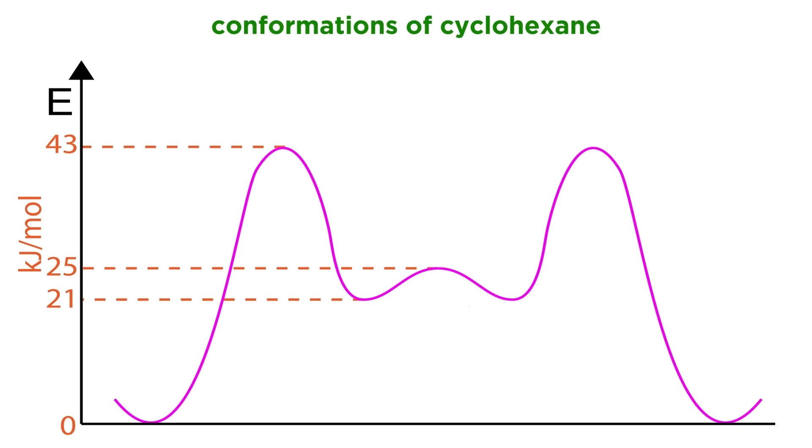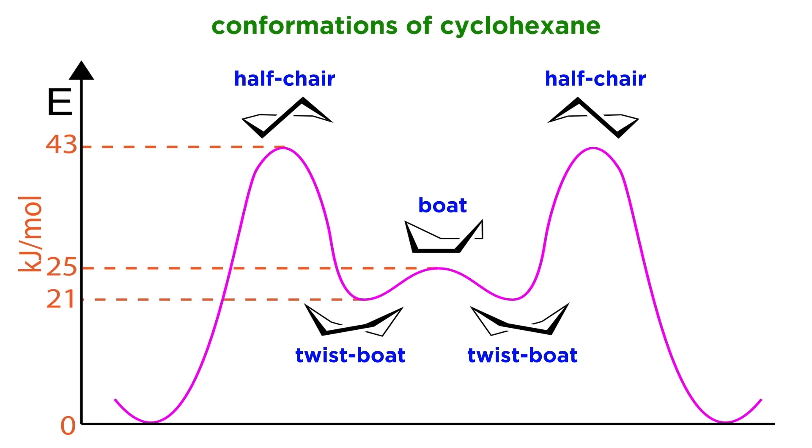The less stable conformations are the half-chair, boat, and twist-boat conformations, while the most stable is the chair conformation.